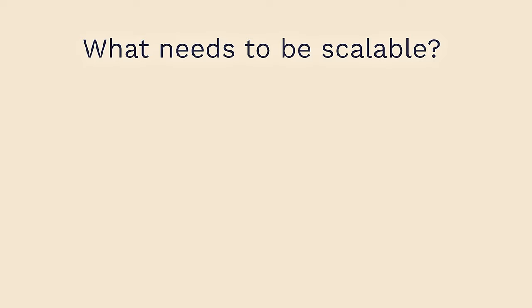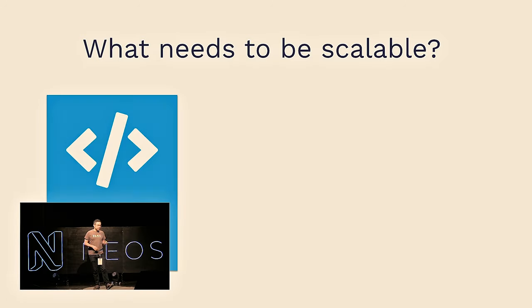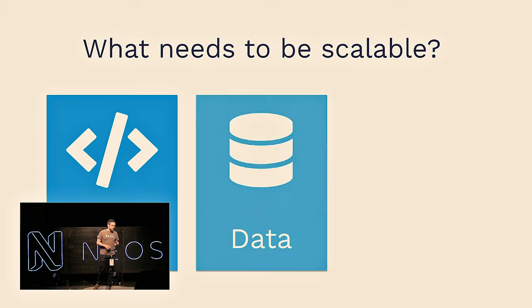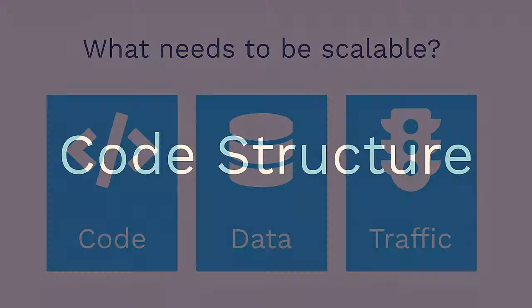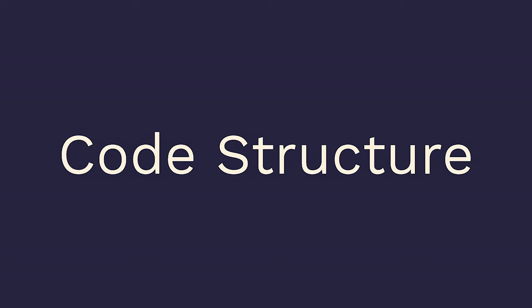So, what needs to be scalable? In my talk, I want to focus on three aspects of scaling: scaling code, scaling data, and scalability in terms of traffic. Let's start with code structure. If you attended Maya Bonschein's talk this morning — and I hope you did — you heard already a lot about best practices regarding structuring your Fusion code and YAML configuration.